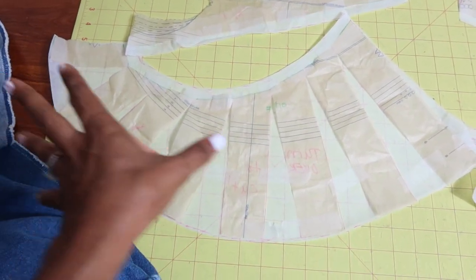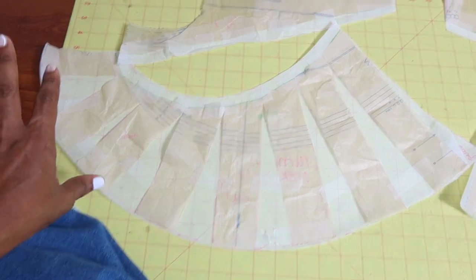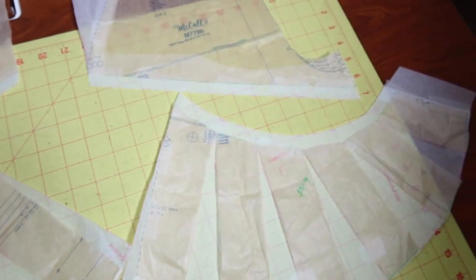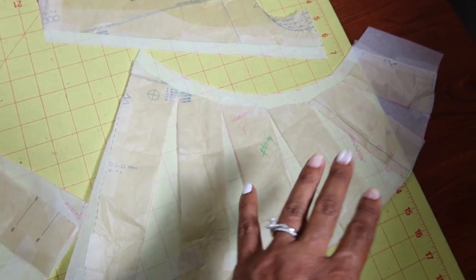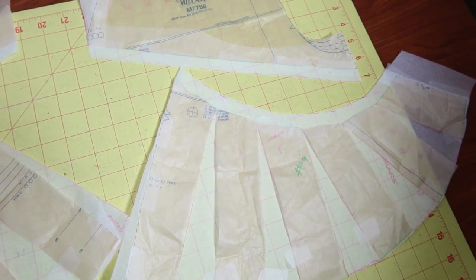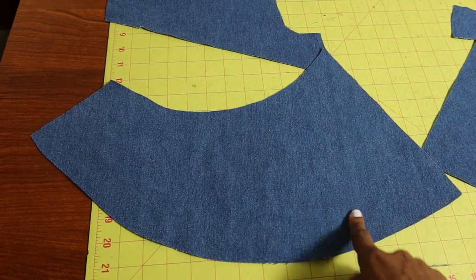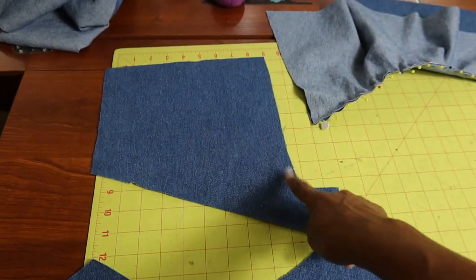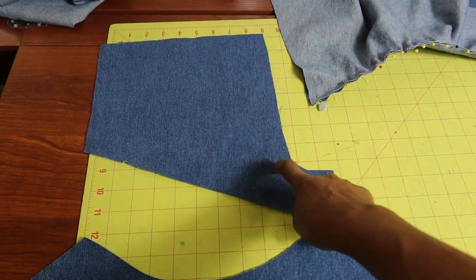Here is the back piece spread a little bit wider and with seam allowance added, and the same over here on the front pieces, just spread out more and added seam allowance. This is one flared front piece and one flared back piece. These pieces will be attached to the corresponding upper portion.